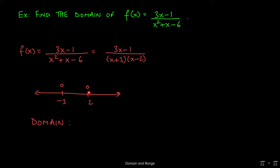And above each of them, I've put an open circle to indicate exclusion. Now we pick a number to the left of negative 3, say negative 4. Now what we're looking for is, we want to make sure that the denominator is not zero for any numbers to the left of negative 3. So if I plug negative 4 into my denominator, x plus 3 times x minus 2, I get negative 4 plus 3, which is not zero.